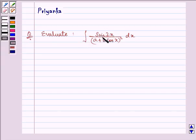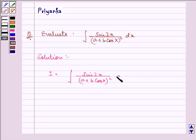It says evaluate integral sine 2x upon a plus b cos x the whole square dx. Here we are given I as integral sine 2x upon a plus b cos x the whole square dx.